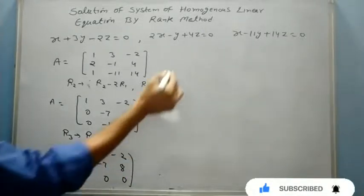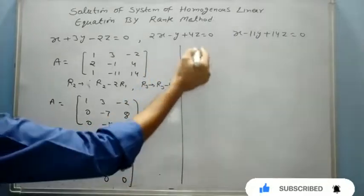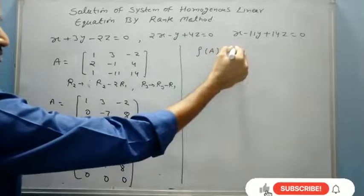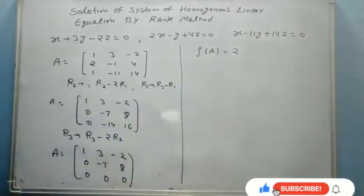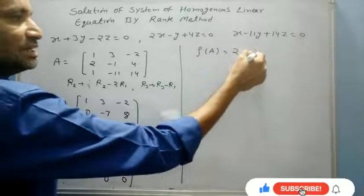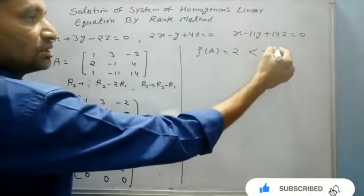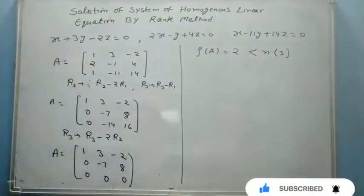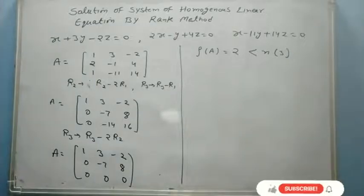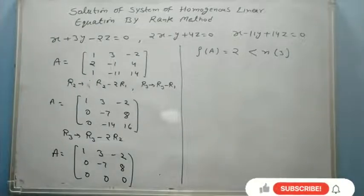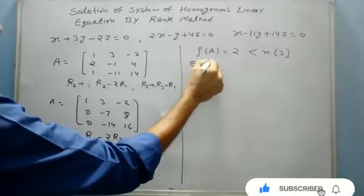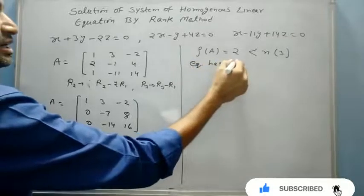Therefore, I can say the rank of A will be 2, which is less than n. n is the number of variables which is 3: x, y, z.